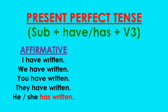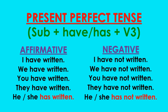In case of negative sentences, the structure is the same as the previous one, but we have to add 'not.' The sentences are: 'I have not written,' 'We have not written,' 'You have not written,' 'They have not written.' And in case of third person singular, it will again be 'has': 'He or she has not written.'